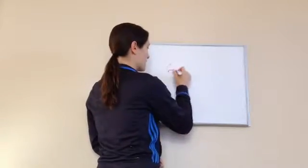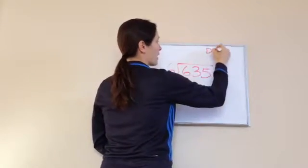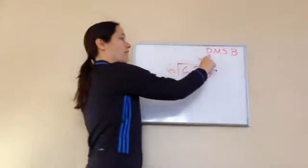Okay? 6 goes into 635. Mom, sister, brother. Divide, multiply, subtract, bring down. Let's divide first.